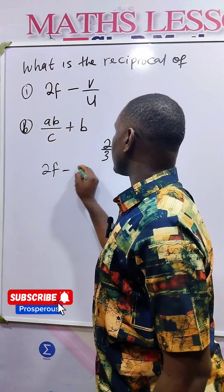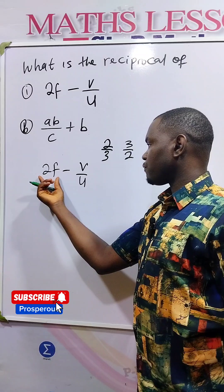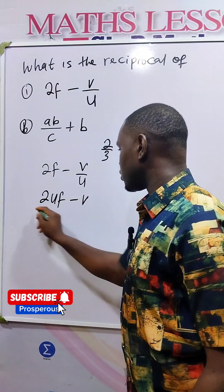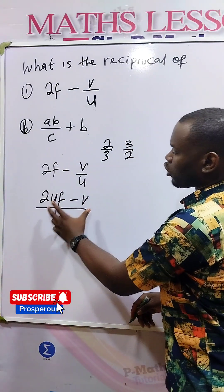we have 2F minus V over U. U will multiply 2F to give us 2UF or 2FU minus V all over U. We have made it a common fraction.